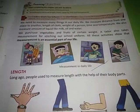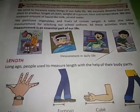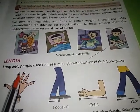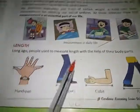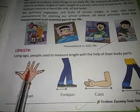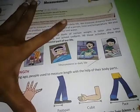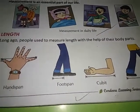Long ago, people used to measure length with the help of their body parts. The first one is handspan — like this, spreading the hand, it is known as handspan. If I want to measure this table: one, two, and so on. This is handspan. Then there is foot span.